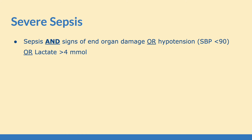We can compare sepsis with severe sepsis. Severe sepsis is when you have sepsis with signs of end organ damage, hypotension where your systolic blood pressure is less than 90, or a lactate greater than 4. So you need to have sepsis, and then one of these three things: end organ damage, hypotension, or elevated lactate.